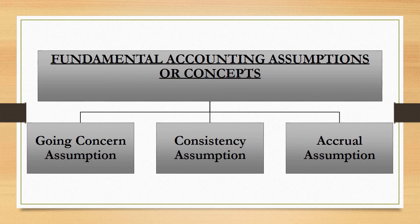Now after knowing the features of accounting principles, we should know the fundamental accounting assumptions or concepts. These assumptions can be divided into three categories: first, the Going Concern assumption; second, the Consistency assumption, which says that once an accounting practice is followed it should be followed year after year; and third, the Accrual assumption, which says we must consider expenses on an incurred basis, not on the basis of payment.